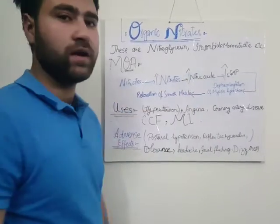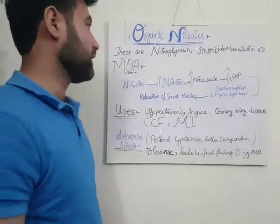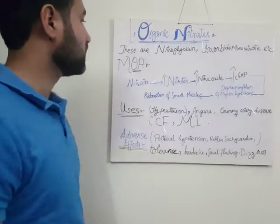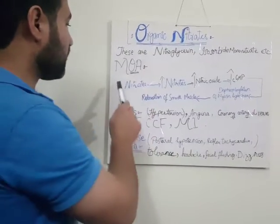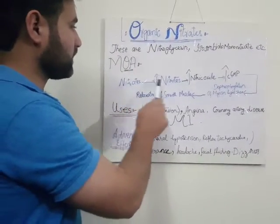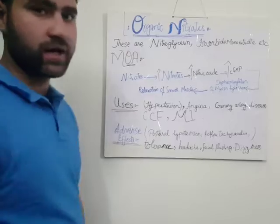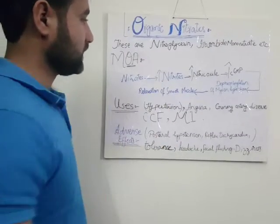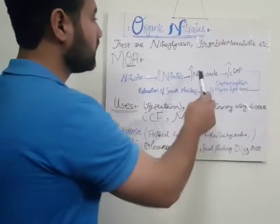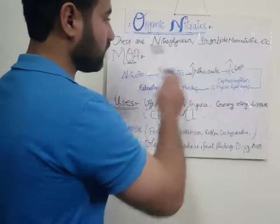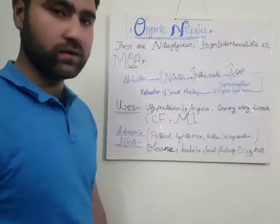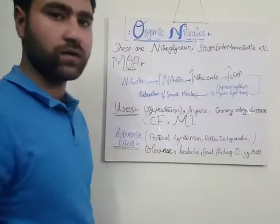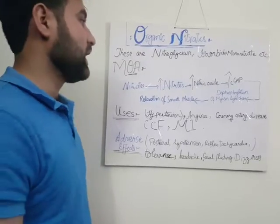Mechanism of action: the organic nitrates are converted into nitrites. When the level of nitrites in the body increases, nitric oxide is produced. This nitric oxide causes the activation of guanylyl cyclase, an enzyme that causes the production of cyclic GMP.